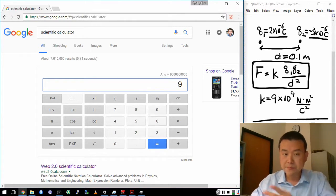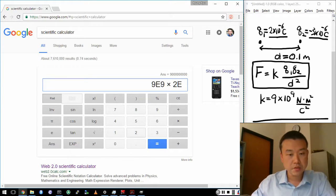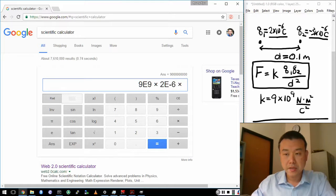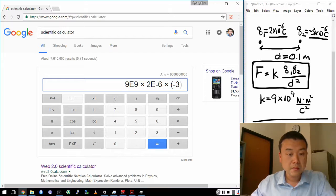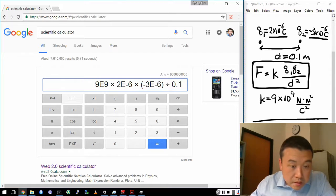So let me just do a simple calculation. 9 times 10 raised to the power of 9 times charge 1. That would be 2 times 10 raised to the power of minus 6 times the second charge. Now I want to do a parenthesis to make sure that minus sign does not get misinterpreted. So minus 3 times 10 raised to the power of minus 6. Close the parenthesis.